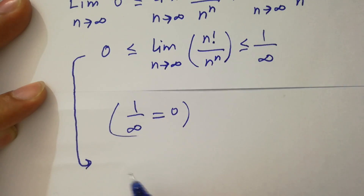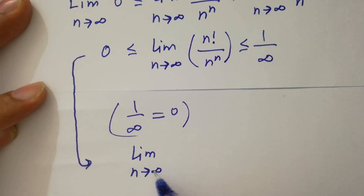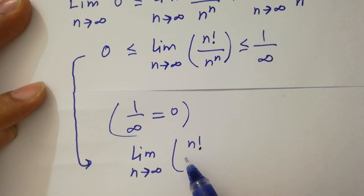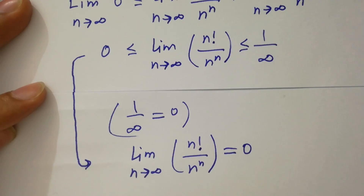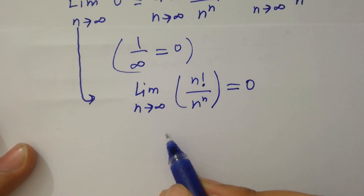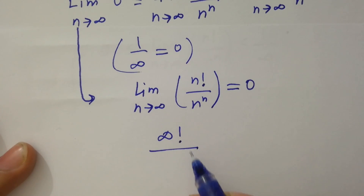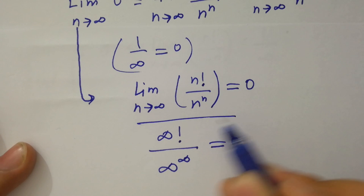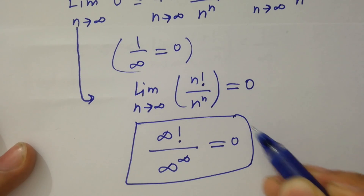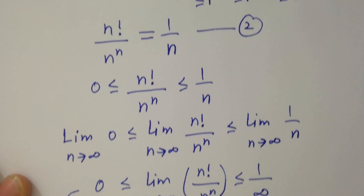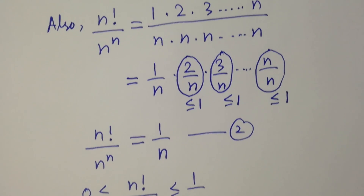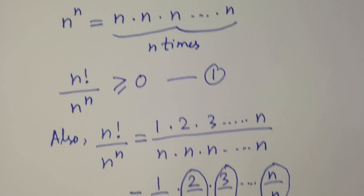Therefore, the limit as n approaches infinity of n factorial over n to the power n is equal to 0. So finally, infinity factorial over infinity to the power infinity is equal to 0, which is our final answer. Thanks for watching this video. Please subscribe to this channel to get notifications of new videos, and don't forget to share these videos with your classmates and friends so they also benefit. Bye!